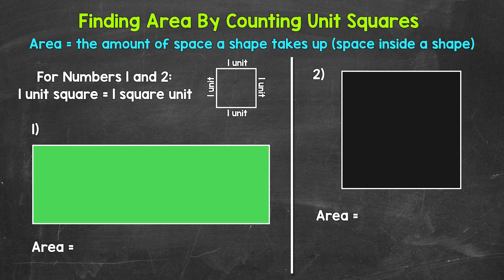We can also think of area as the amount of space inside a shape. Now like we talked about in the introduction to area video, we measure area in square units. So what we can do, we can cover a shape with unit squares — squares that have side lengths of one unit. There's a unit square right there above the green rectangle. Now each unit square has an area of one square unit. So we can count the unit squares that cover a shape, and that will give us the shape's area. Let's jump into our examples, and we will go through eight examples in this video, starting with numbers one and two.